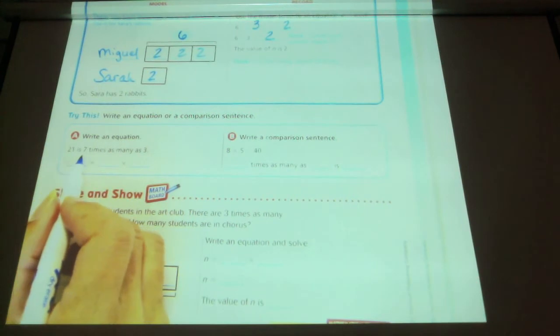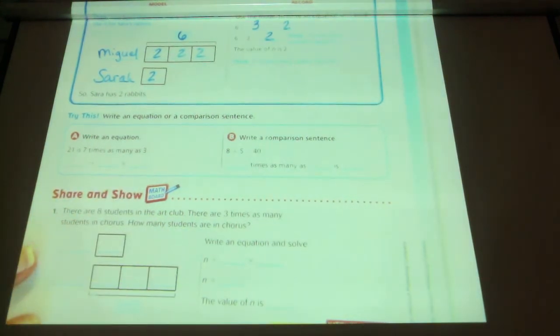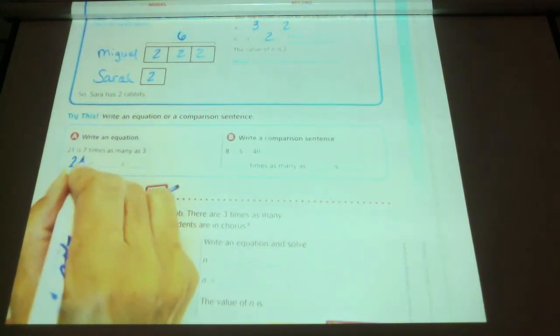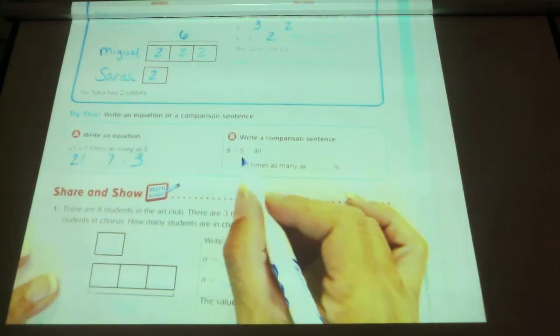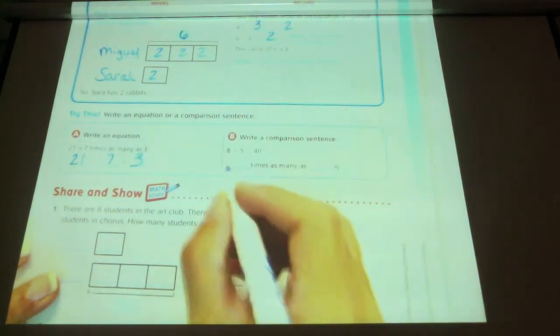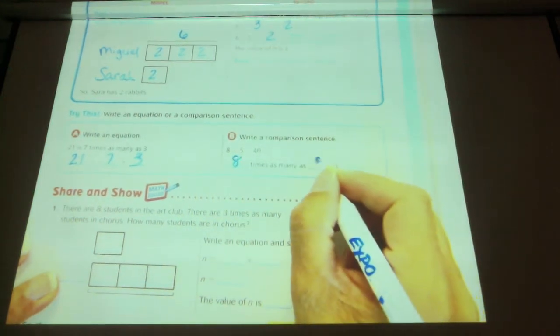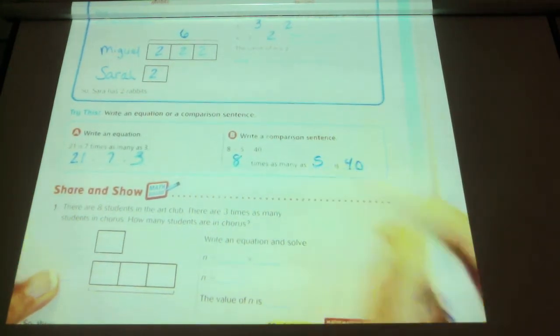So 21 is 7 times as many as 3. 21 is 7 times as many as 3. 8 times 5 equals 40. So 8 times as many as 5 is 40.